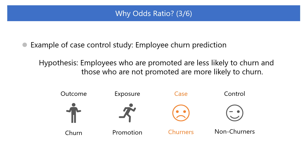The design of this study will be as follows. First, a case will be selected. A case is a participant for whom the outcome of interest in the study occurs. In the case of employee churn, the case group is identified as those employees who have left the company within a certain time period. On the other hand, participants for whom the outcome of interest has not occurred are referred to as controls. Employees who did not churn within the same time period will be selected as the control group. To eliminate the influence of factors other than promotion, the control group will be selected from employees with similar job titles, ages, length of service, and other characteristics as the case group.